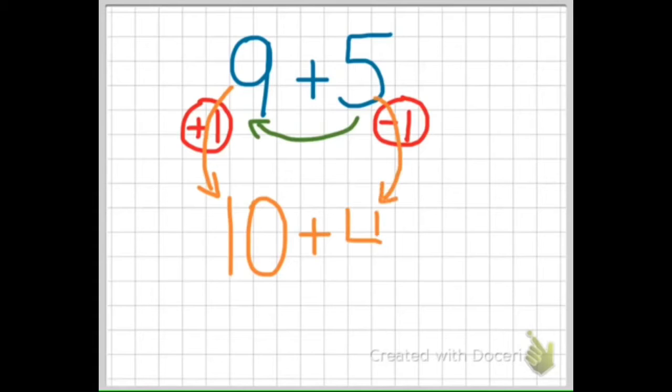If the 9 steals one from the 5, the 9 is going to get one bigger while the 5 gets one smaller. So now we rewrite the number sentence. If the 9 gets one more, it becomes a 10. And the 5 gets one taken away. It becomes one smaller and becomes a 4.